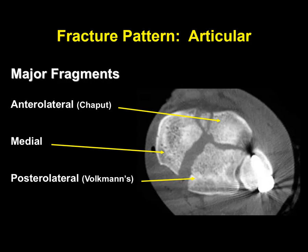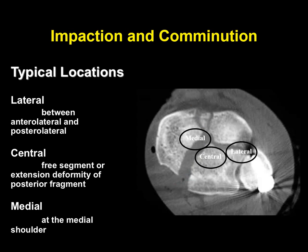Here are the major fragments — they often fall into patterns because ligament attachments create them. You have the posterior inferior tib-fib ligaments here and the anterior inferior tib-fib ligaments here, giving you the Chaput fragment and the Volkmann fragment or the posterior malleolus, plus the medial fragment. You can also get impaction in the corners of these injuries — that's where you get comminution that makes things even messier.